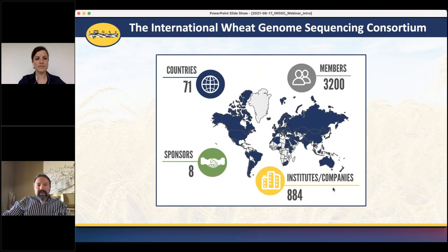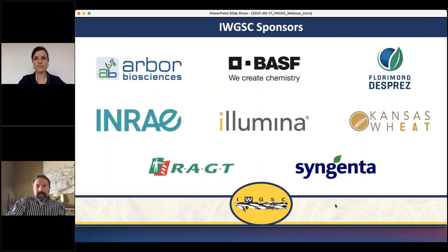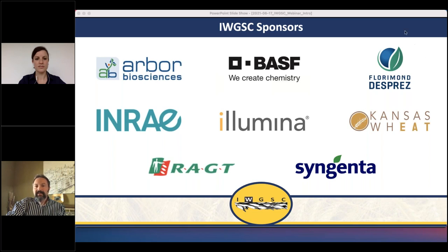The IWGSC currently has about 3,200 members across 71 countries, with eight sponsors and partnerships with almost 900 institutes and companies. We'd like to thank our sponsors that make everything possible: Arbor Bioscience, BASF, Inari, Illumina, Syngenta, Florimo, and Kansas Wheat.